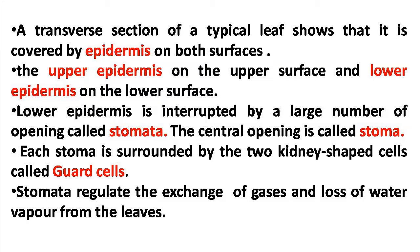During photosynthesis, when we exchange gases — carbon dioxide and oxygen — the stomata help facilitate that exchange. The stomatal opening consists of kidney-shaped guard cells. This stomatal opening regulates gas exchange and the loss of water. During summer and during sunlight, the stomata prevent excess loss of water.